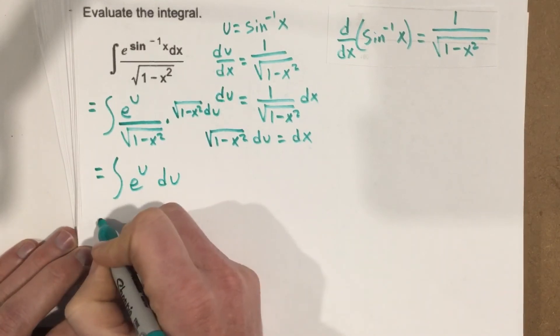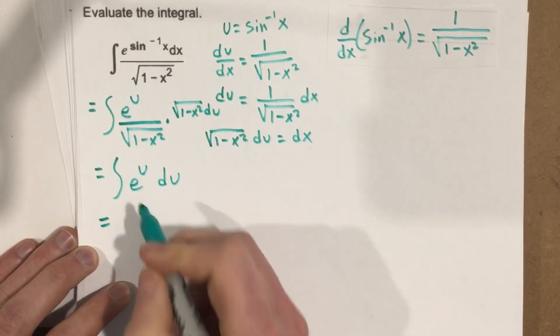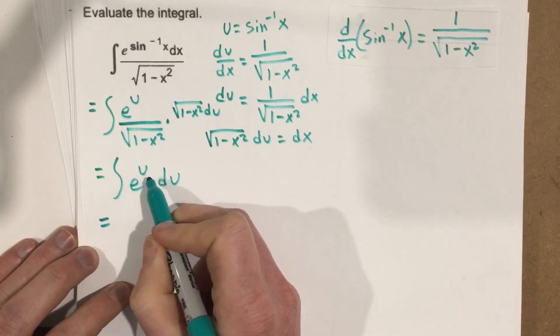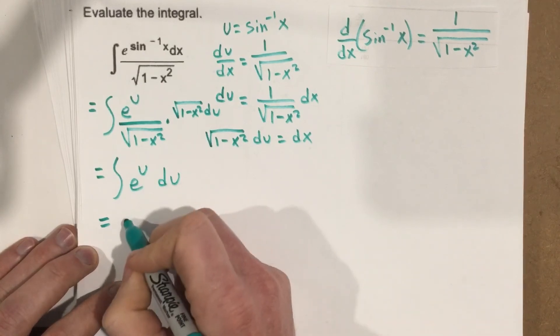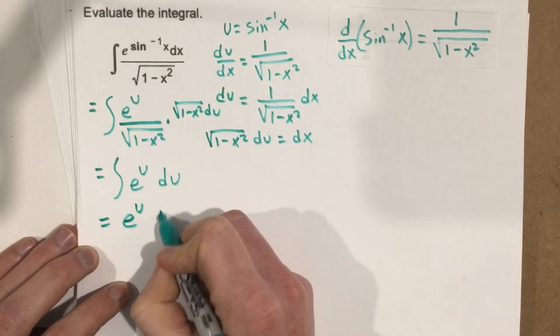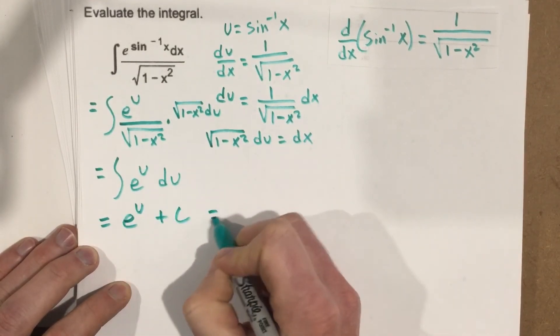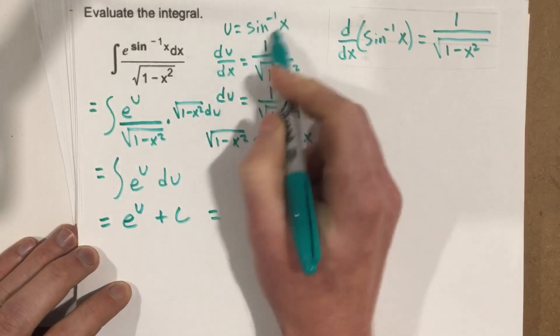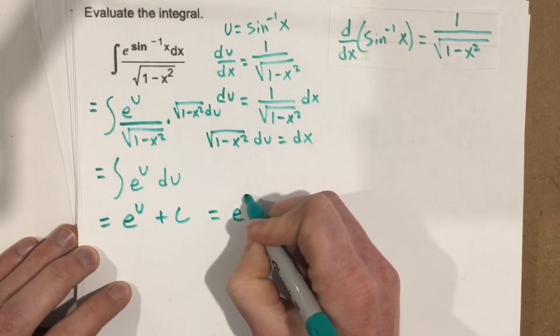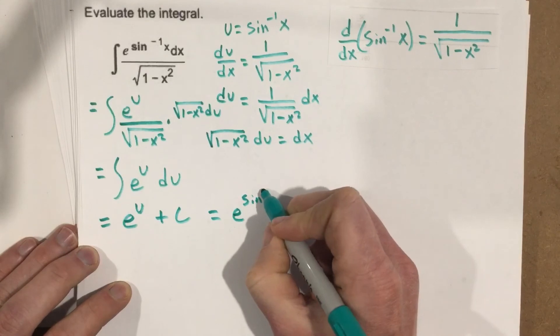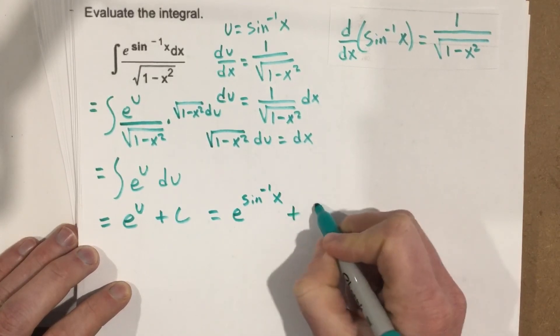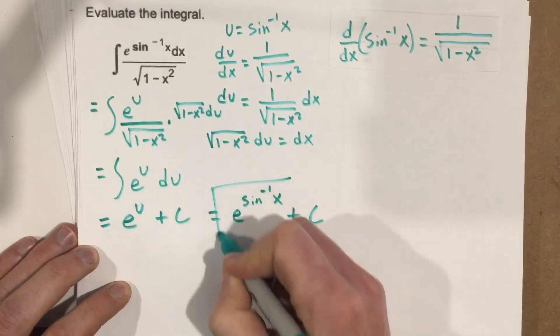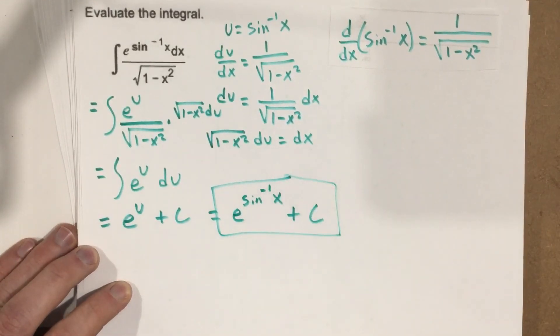Well, we know the integration of e to the u because we know the derivative of e to the u, or e to the x, is e to the x, so the antiderivative is just itself. So we end up with e to the u plus c, and the only thing we have to do then is substitute our u back in, and we get e to the sine inverse of x plus c, and that's the integral. And that's it!